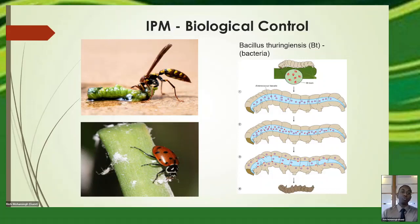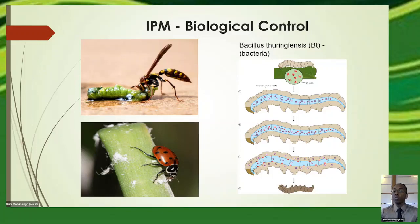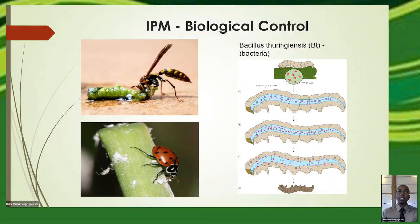Another biological control option is the BT product, or Bacillus thuringiensis — a live bacteria sold in agro shops. You apply it on your plant and it doesn't harm the plant, but when a larva or caterpillar feeds on the treated leaves, the bacteria gets into the larva's system and activates, killing the organism. That's another example of biological control — different methods you can use to your advantage instead of using pesticides.